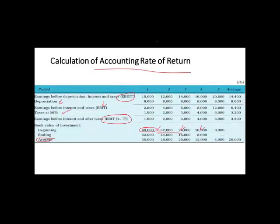After calculation, you'll find that this is your total outflow and this is the inflow. You'll divide it and get the value for accounting rate of return.